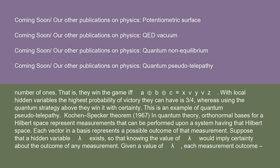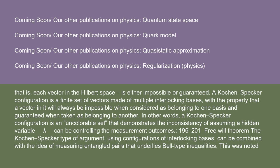The Kochen-Specker theorem (1967): In quantum theory, orthonormal bases for a Hilbert space represent measurements that can be performed upon a system, and each vector in a basis represents a possible outcome of that measurement. Suppose that a hidden variable λ exists so that knowing its value would imply certainty about the outcome of any measurement. Given a value of λ, each measurement outcome — that is, each vector in the Hilbert space — is either impossible or guaranteed. A Kochen-Specker configuration is a finite set of vectors made of multiple interlocking bases, with the property that a vector will always be impossible when considered as belonging to one basis and guaranteed when belonging to another. In other words, a Kochen-Specker configuration is an uncolorable set that demonstrates the inconsistency of assuming a hidden variable λ can control the measurement outcomes.